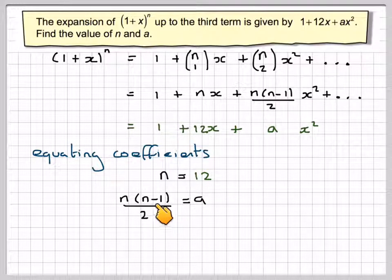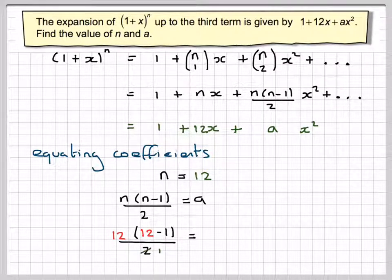If we now put 12 into this, we're going to get 12 times (12 - 1) over 2, cancelling the 2 with that 12.